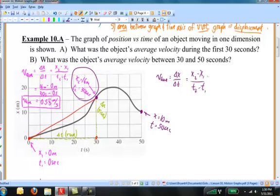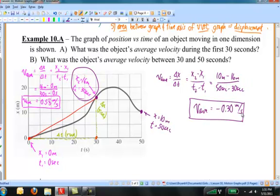Now, in this case, x final is 10 meters and x initial is 16 meters. So, this 2 and this 1 subscript, you could change if you wanted to, to be final and initial. In this case, my final position was 10 meters. My initial position was 16 meters. My final time was 50 seconds and my initial time was 30 seconds. And again, I'll put that into my calculator. I find the average velocity is negative 0.30 meters per second.